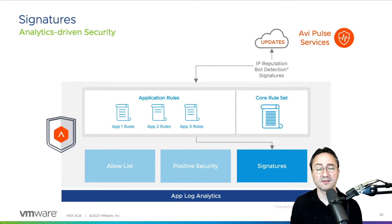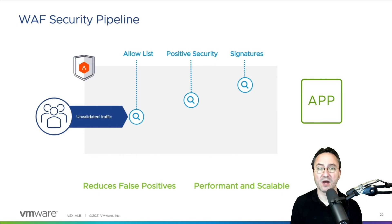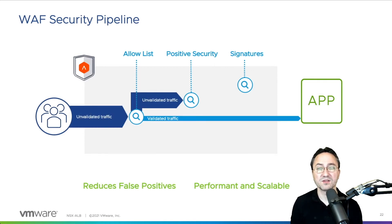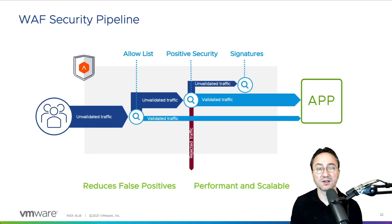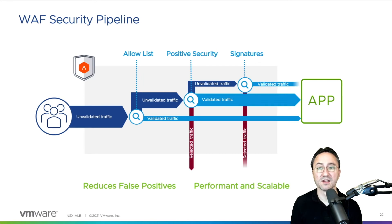Let's examine how the OWASP pipeline integrates the signatures. After allow list and positive security, the remaining parts of the traffic are sent to the signatures for inspection. If any attack is found, the traffic is blocked, but otherwise sent to the application for processing, finishing the WAASP security pipeline.